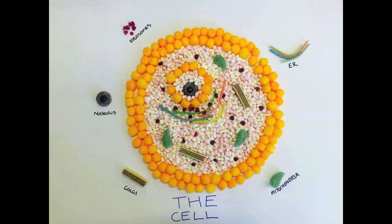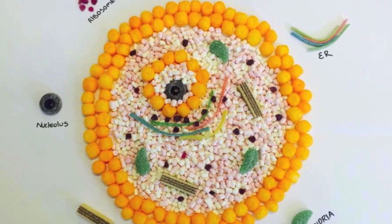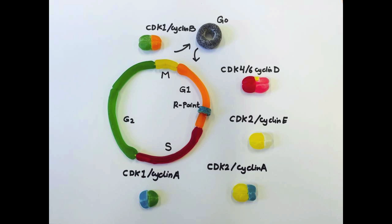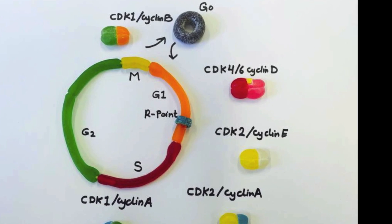The control of the cell cycle takes place in the nucleus. Here we have the phases of the cell cycle, as well as the cyclin-dependent kinases, easily known as CDKs. CDKs are serine threonine kinases, and their function is dependent on cyclins.